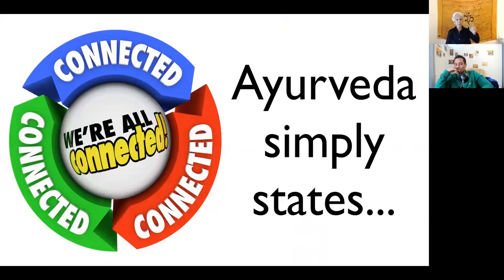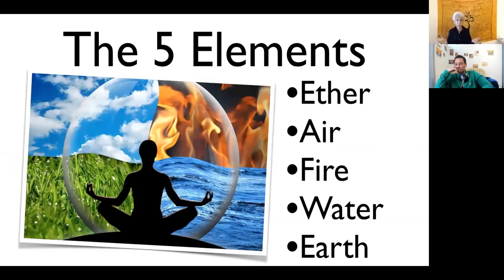It also states that we're all interconnected. When you step outside of your house, you're going to be in nature. Is it drafty? Is it windy? Is it hot? Are you living in the desert? That is going to affect you. You're not disconnected from nature. Let's start with the elements. What are the five elements? Everybody knows about the four elements, so you have ether, and you have air, fire, water, and earth.